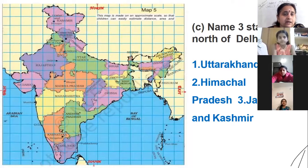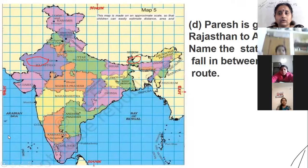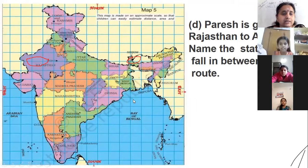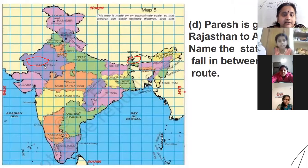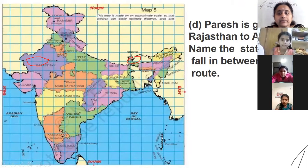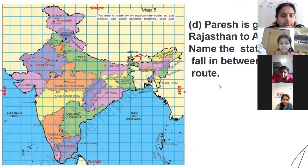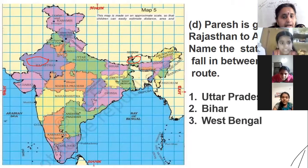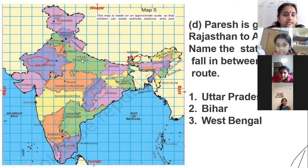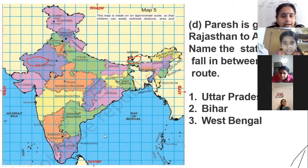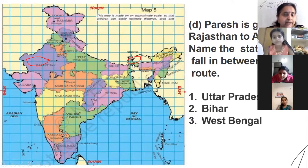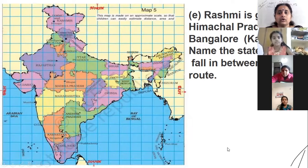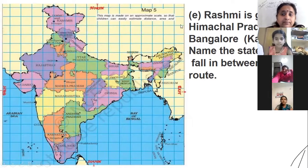Now Faresh is going from Rajasthan to Assam. Here is Rajasthan, and here is Assam. Name the states which fall in between his route. The states which pass in between — it is Uttar Pradesh.